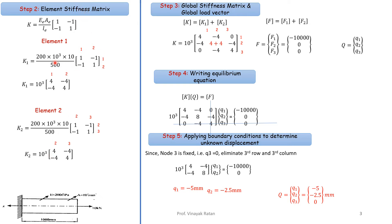Once the element stiffness matrices are done, assemble them to obtain the global stiffness matrix: K = k1 + k2. Since we have two elements and three nodes, the size of the global stiffness matrix is 3×3. Each node has one degree of freedom (displacement in one direction), so the global stiffness matrix is 3×3.